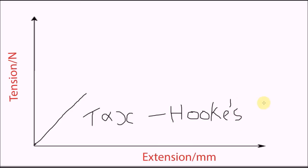If we further increase the tension, instead of it returning to its original shape, the spring will retain its new shape, meaning it is plastically deformed. The point at which this happens is called the elastic limit.